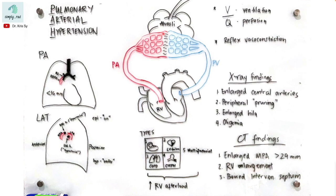In pulmonary embolism, there is narrowing of the arterioles. That narrowing of these vessels creates higher resistance, and higher resistance in the arterioles means higher resistance in the pulmonary artery overall.